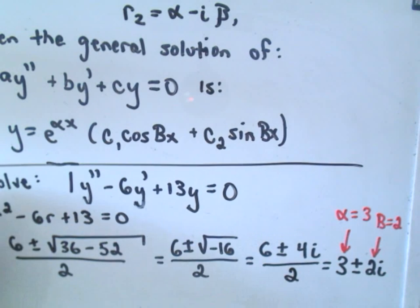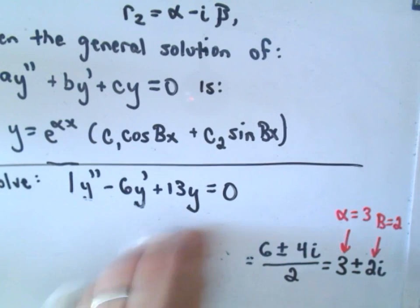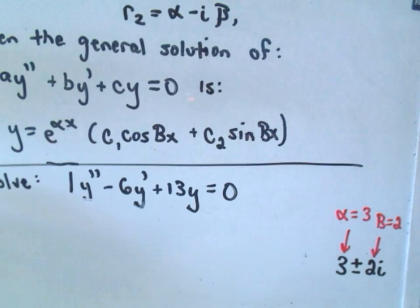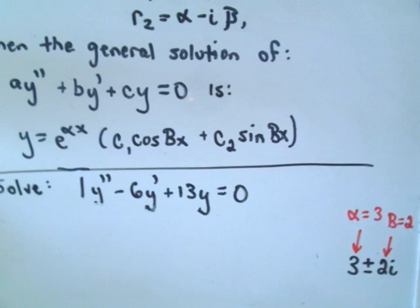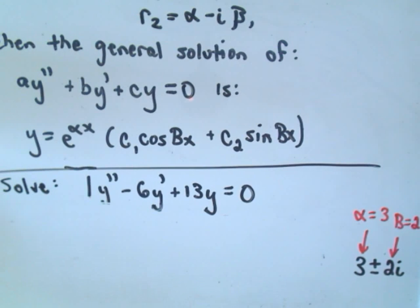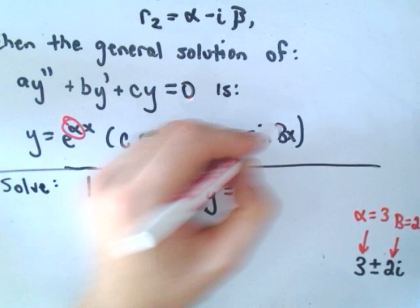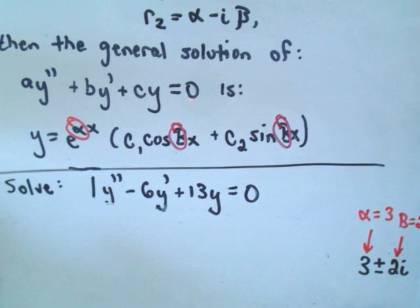Now all we have to do is drop that into our formula. I'm going to fill in α = 3, β = 2, drop in alpha, beta, and beta, and then we'll have our general solution.